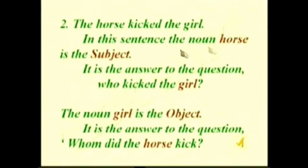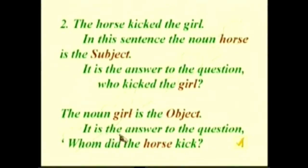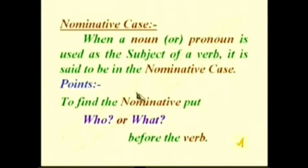In the sentence 'The horse kicked the girl,' the noun horse is the subject — it is the answer to the question 'Who kicked the girl? The horse.' So the horse is the subject. Then the noun girl is the object, because it answers the question 'Whom did the horse kick? The horse kicked the girl.' The girl is the object of the sentence.